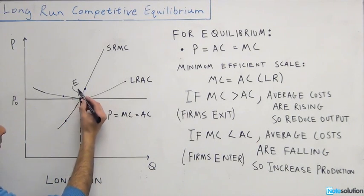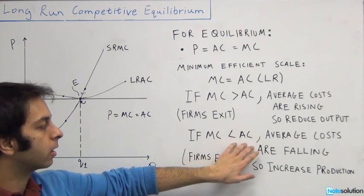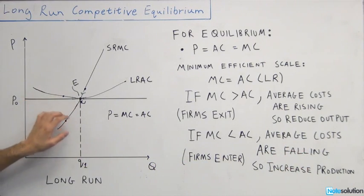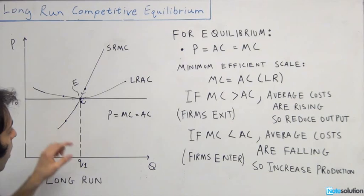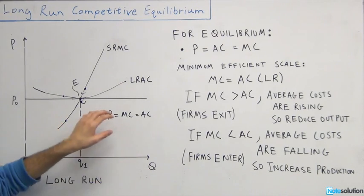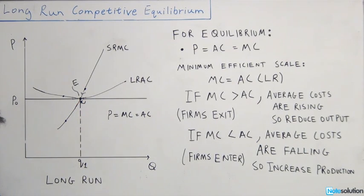This points you back to the minimum efficient scale where marginal cost equals average cost. Similarly, if marginal cost is less than average cost, average costs are falling, which invites firms to enter and increase production until we reach the minimum efficient scale. So option D is correct: in the long run equilibrium of a market with free entry and exit, if all firms have the same cost structure, then firms will be operating at their efficient scale.